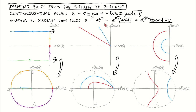Let's describe a continuous time pole in terms of its real and imaginary parts, sigma and omega_d. The corresponding discrete time pole is then given by the magnitude e to the power sigma*T and the angle omega_d*T. We now vary sigma and omega_d and observe how the pole locations change in the s-plane and the z-plane.